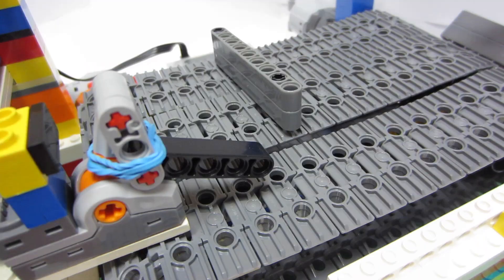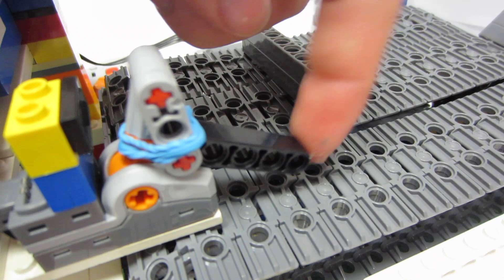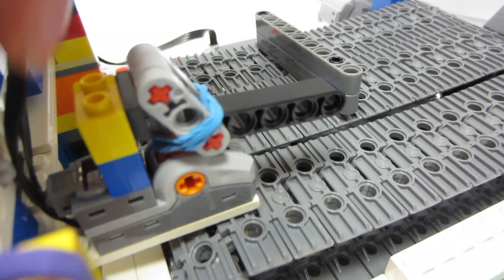The shutoff switch is pretty simple. All that happens is when the blockades hit this, it just turns the switch off, and this is just connected to the two motors that are running the track.